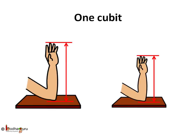So one arm length is one cubit. But it is not the right way to measure length, because shorter people have shorter arms, so when they measure, one cubit will be shorter. And for taller people, it will be longer.